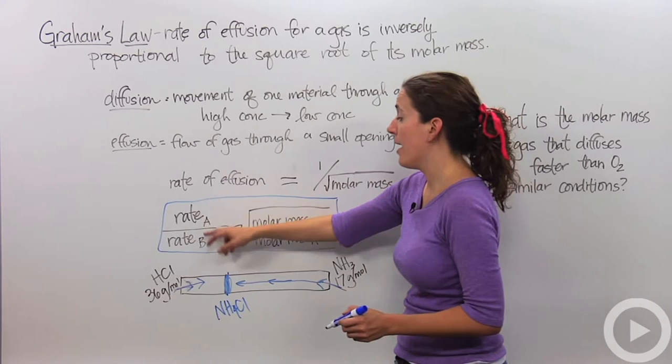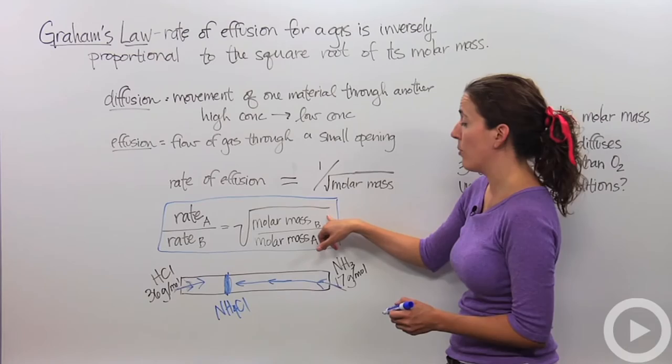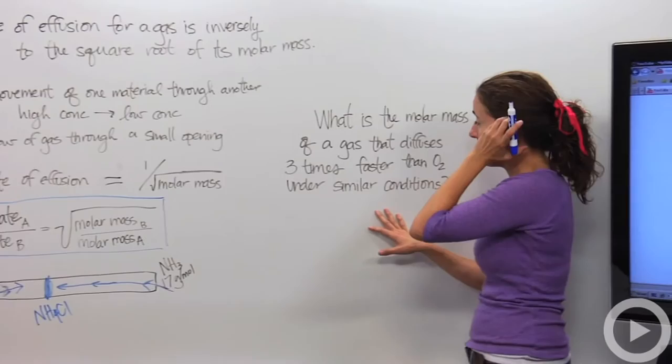So if you were to compare the rates and actually find the rates, when you compare them, the rate of A compared to the rate of B is equal to the square root of the molar mass of B over the molar mass of A. So let's try to put this into practice.